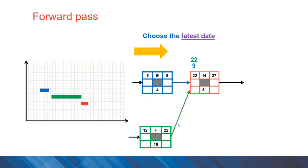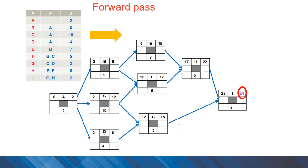Here is an example for activity H. You can see we have two options as the early start time: 9 coming from activity E or 22 coming from activity F. In the forward pass, the rule is to choose the latest date. In this case, 22 days. You can complete the forward pass for this project, and the completion time of 24 days is calculated.